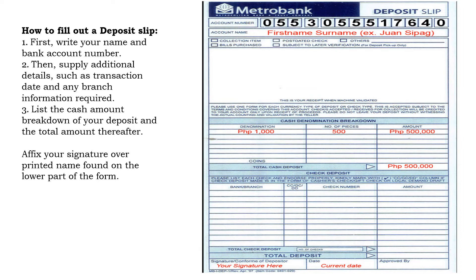In this part you can see the cash denomination breakdown. For example, if you are going to deposit a total amount of 500,000 pesos, you look at your money and see what the denominations are. In this example, the depositor has 1,000-peso bills, and the number of pieces is 500. If you multiply it, that will be 500,000 pesos in total. Do not forget to check the relevant boxes — collection item, bills purchased, or check deposit. And please do not forget to affix your signature and the date. That's how we fill out a deposit slip.